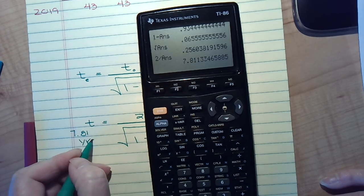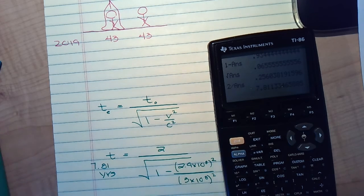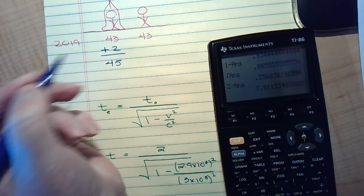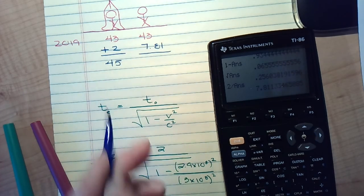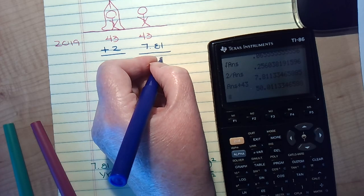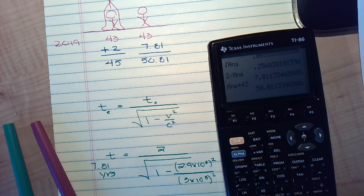All right, so to find T, everybody has their own keystroking preferences. On my calculator, I like to start with how fast he's going. So he's going 2.9 to the eighth. And then I'm going to square that. Then I'm going to divide by 3 to the eighth and square that. And then I will do 1 minus that answer. And then I'm going to square root that answer. So there's my denominator. And then I'm going to say 2 divided by that answer.